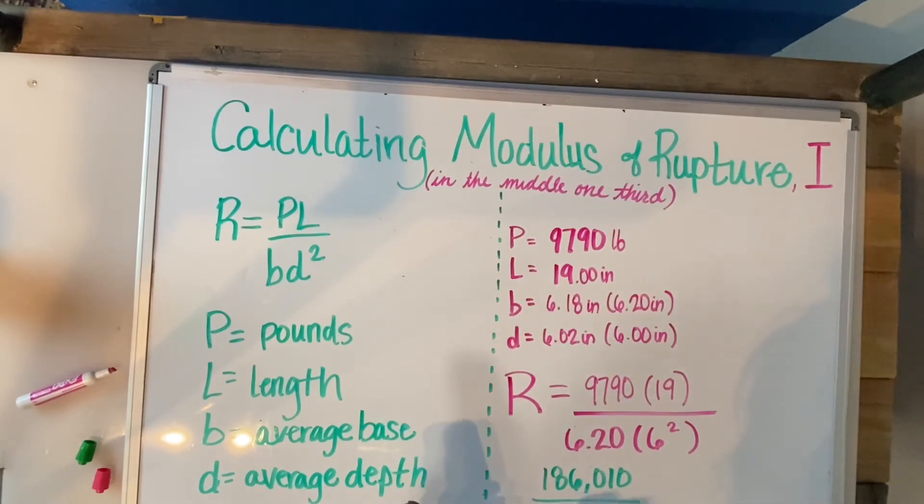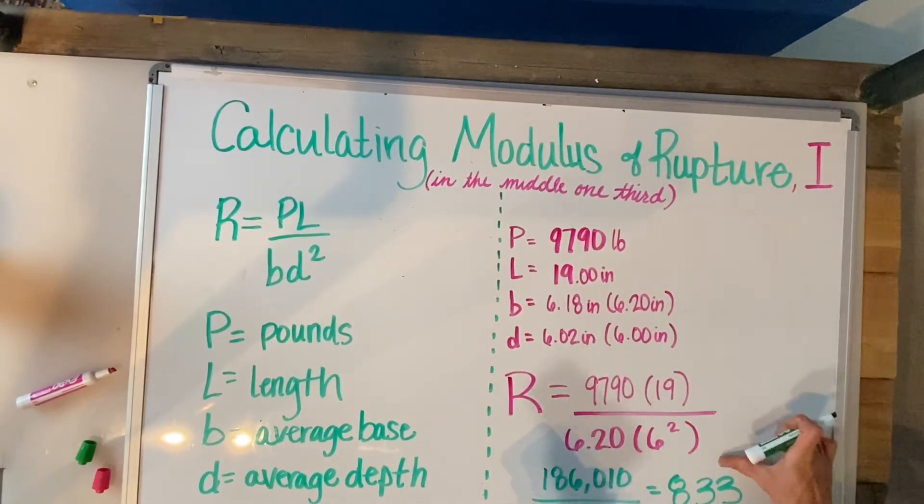Divided by 223.2 equals 833, and per the standard we are rounding to the nearest 5 PSI.